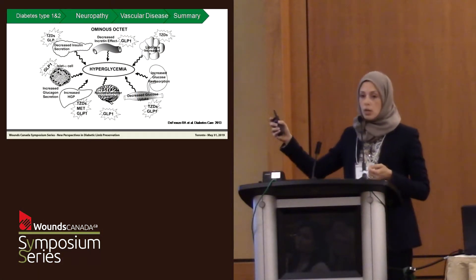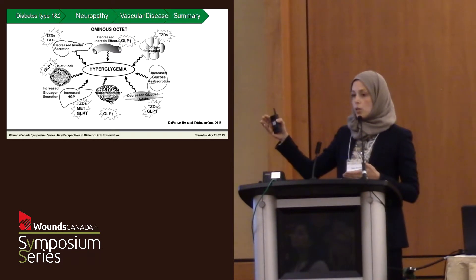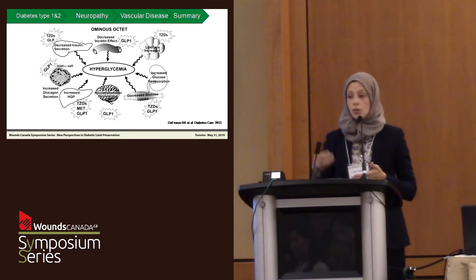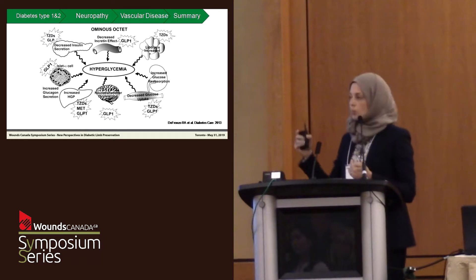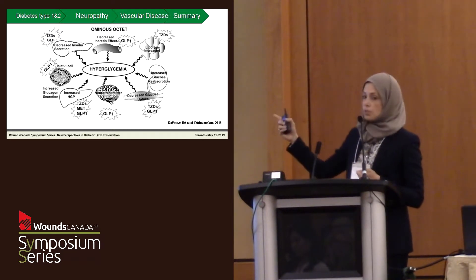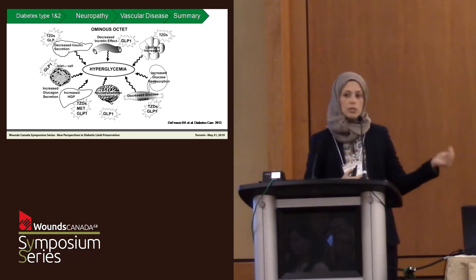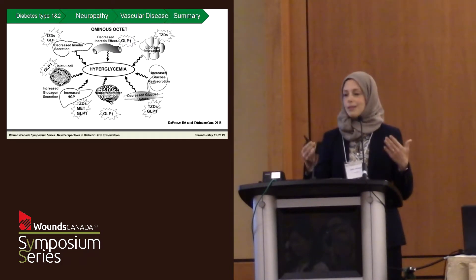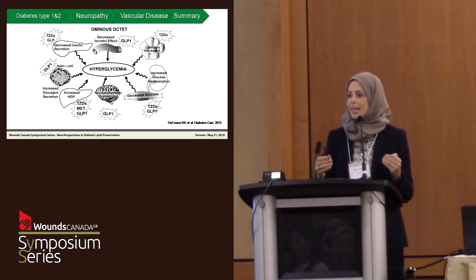We also have the incretin effect — the gut is a big hormonal organ, and that's where GLP-1 analogs come in. We also know that nerves express GLP-1, and there are some preclinical studies looking at that shared pathway. There's also insulin resistance at the level of the adipocyte — fat cells are not innocent. And there's increased glucose reabsorption, which is where SGLT2 inhibitors come in, reducing the threshold at which the kidneys excrete glucose.